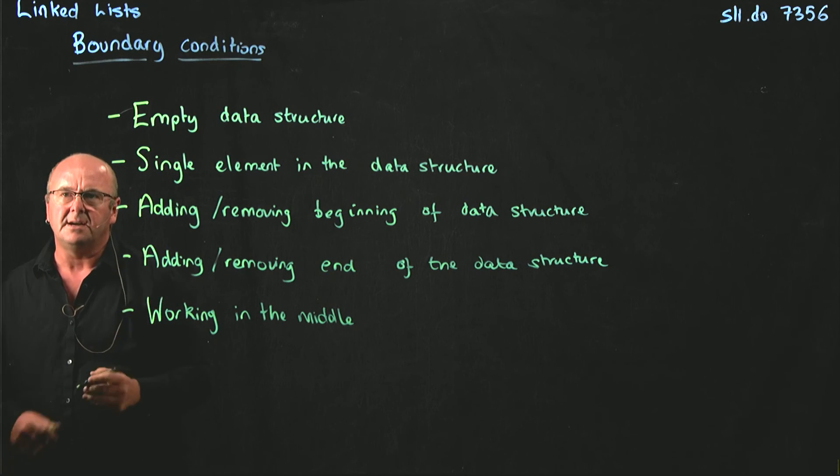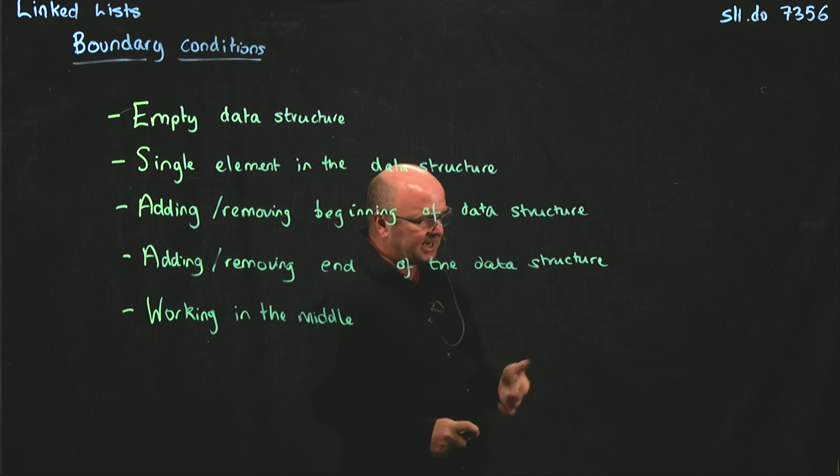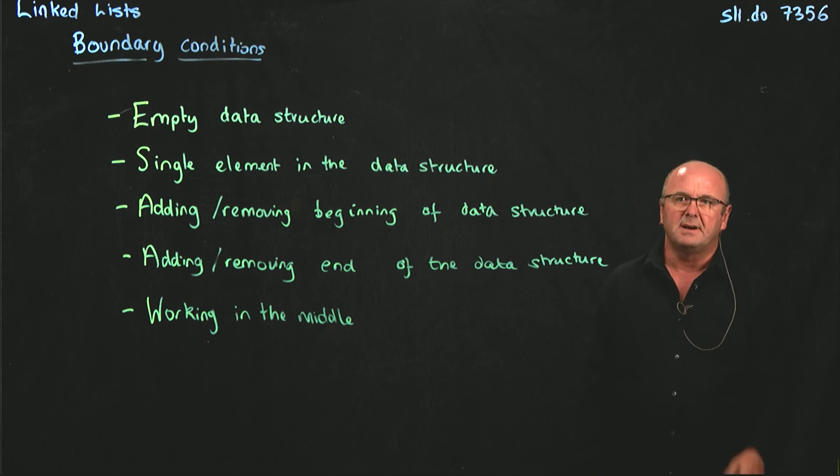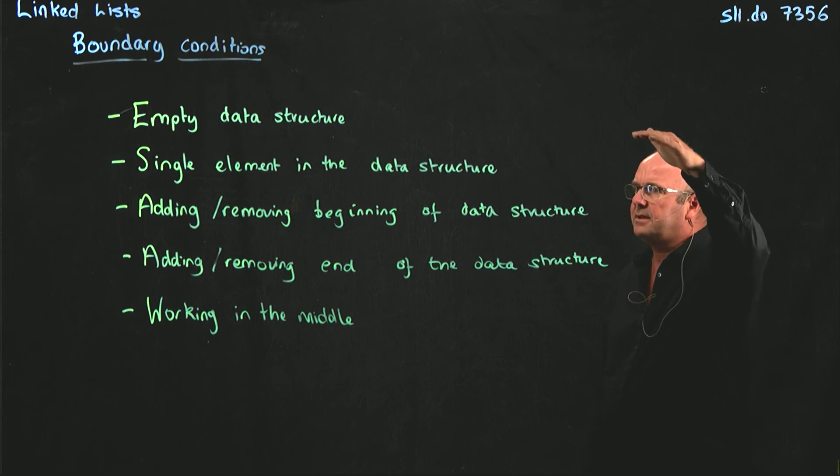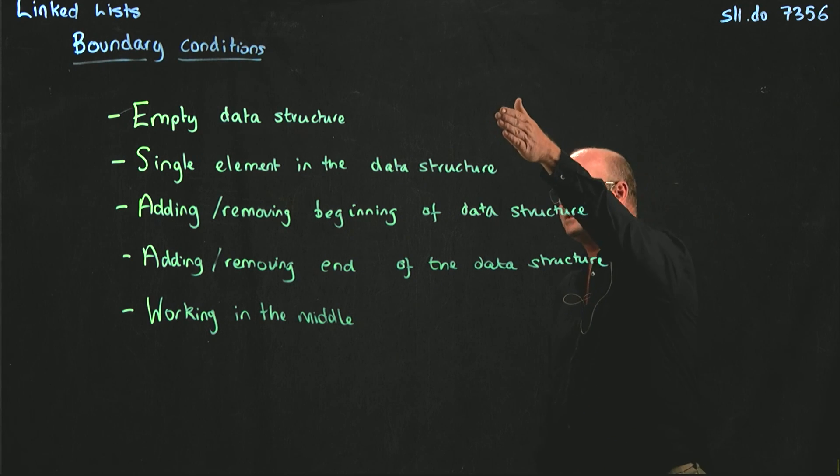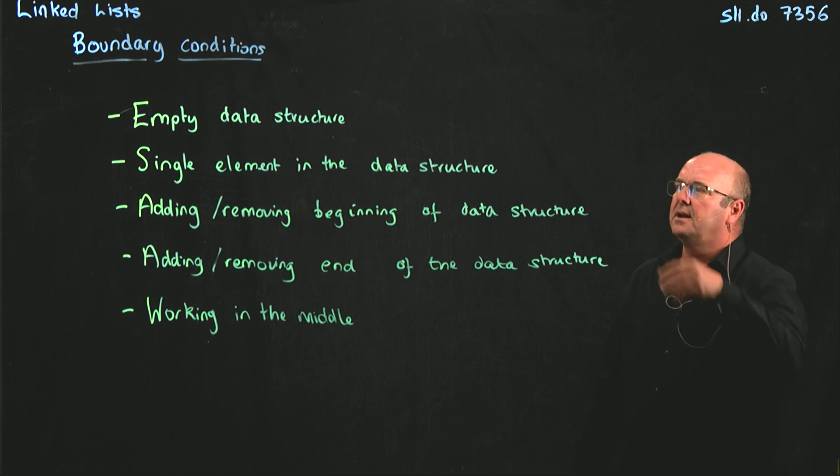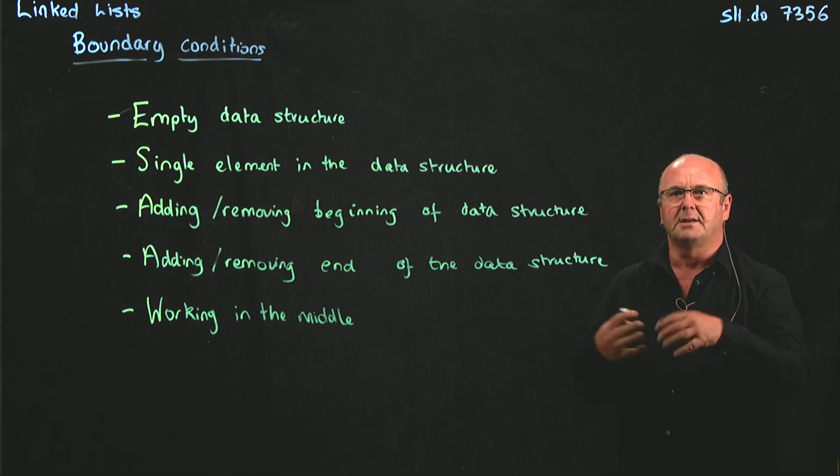Every time you work on a method in your linked list, add first, add last, remove first, remove last, peak first, peak last, all of those methods, every time you work on one of those methods, you need to think about each of these five conditions and say, how does it affect it if I've got an empty data structure? Am I going to get a null pointer exception? How is it affected if I've got a single element in the data structure? Am I going to mess things up?